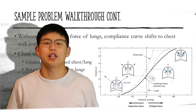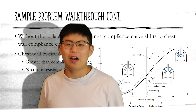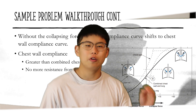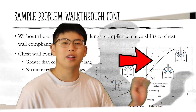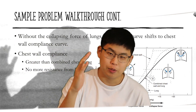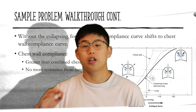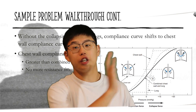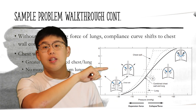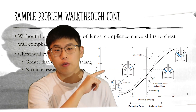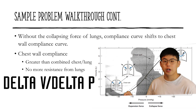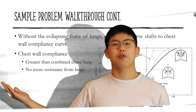For chest compliance, referring to the original diagram: when the lungs are separated from the chest wall as in pneumothorax, the compliance curve becomes more like the chest wall's compliance alone. This is because the resistive collapsing force of the lungs is no longer present, so the compliance shifts to reflect just the chest wall. This compliance is greater because the lack of resistive force means there can be a greater change in volume for a given pressure — remember, compliance is change in volume over change in pressure, so a greater volume change increases compliance.